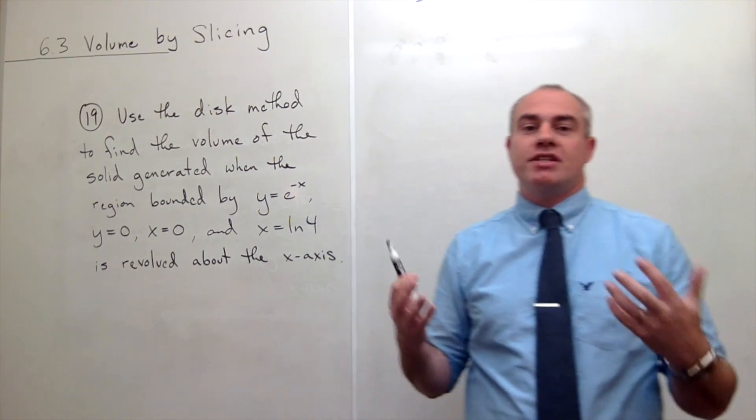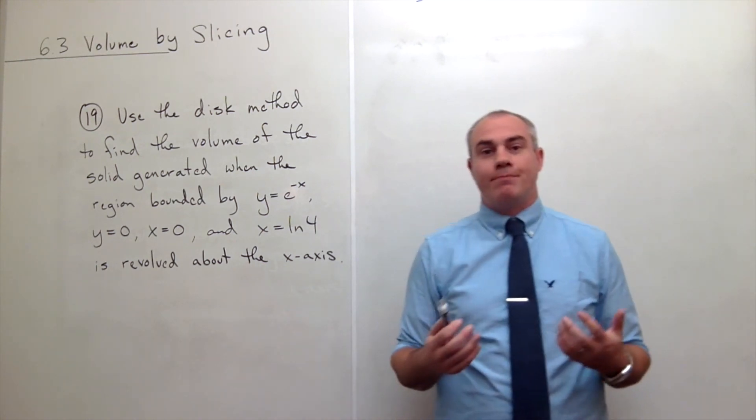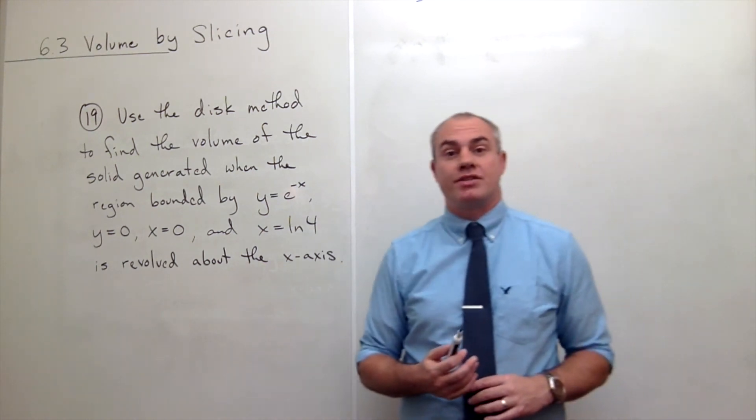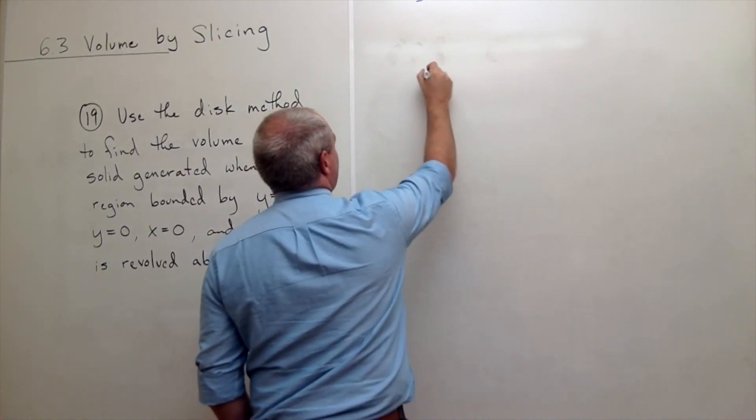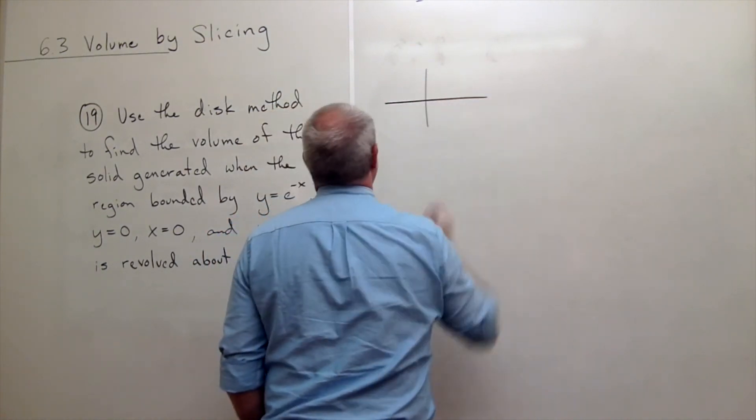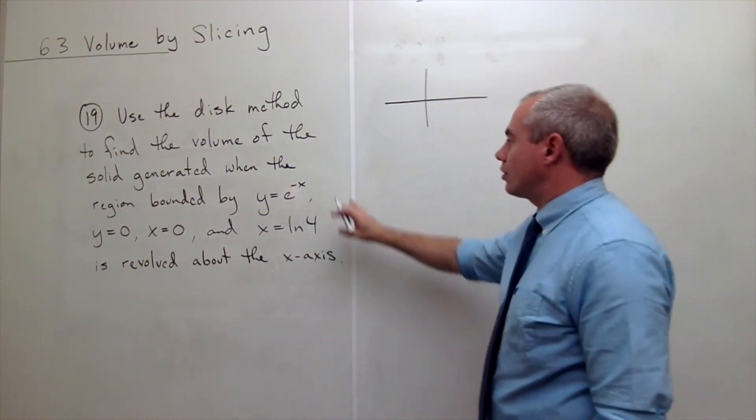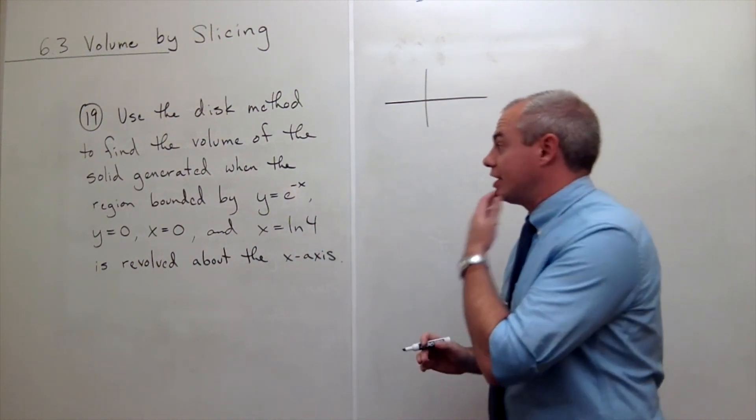So to start this problem, let's just get a feel for what this shape looks like before we start trying to find the volume. So we should always draw a picture first, if possible, of what we're trying to revolve.